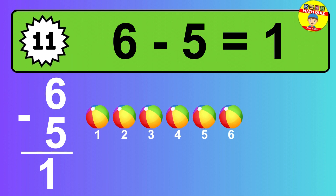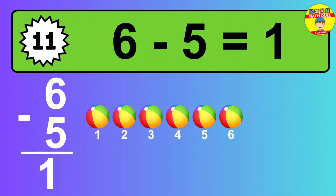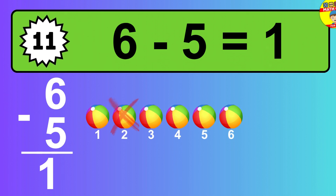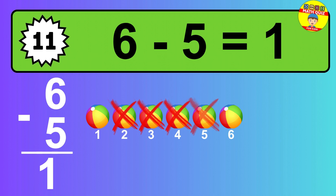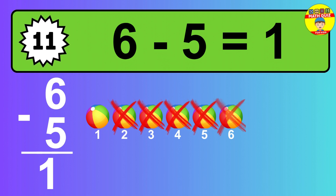Question 10. 6 minus 5 equals what? The answer is 6 minus 5 is 1. Let's count it. 1.